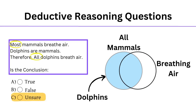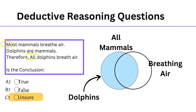A lot of people get this wrong because they bring prior knowledge. A defining aspect of a mammal is breathing air, so it seems like a reasonable assumption. But in this question, you must bring no prior knowledge, and if it's not explicitly stated, do not assume.